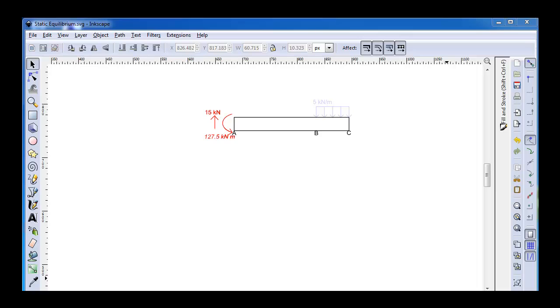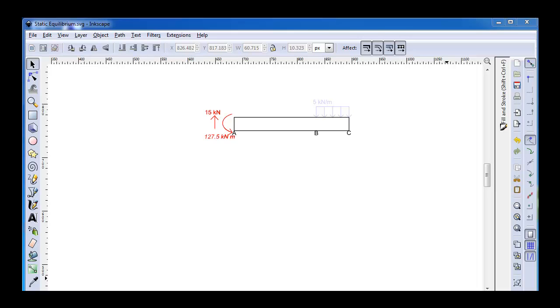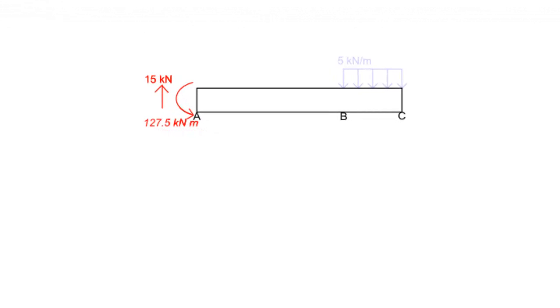Now let's analyze this beam by looking at its two unique regions, region AB and region BC. First, in region AB, I'm going to place an imaginary cut a distance x from point A. Then we will look at the forces required to ensure that the structure remains in static equilibrium. By leaving the distance to the cut as the variable x, we can see how the internal resultant loading changes throughout the entire section AB.